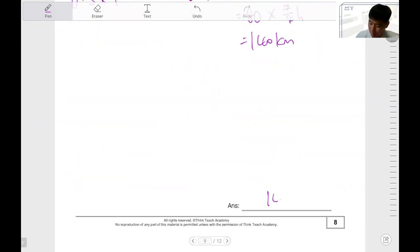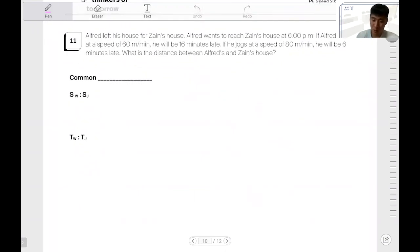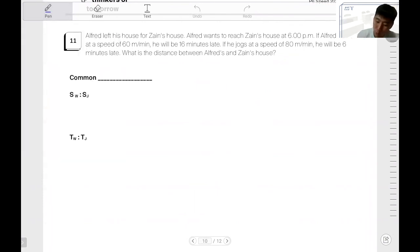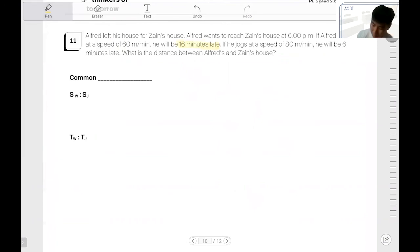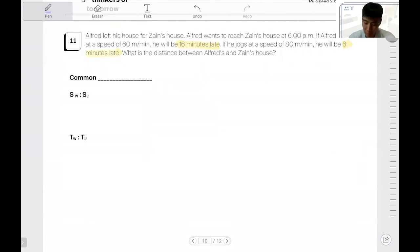Okay. So, it's the same thing for the subsequent few questions. The only tricky thing, which I think, which is probably where Lakehead, you may have made the mistake, is this. How do you interpret 16 minutes late and 6 minutes late? Okay, Lakehead. So, that's probably what you need to take note of. Okay. Again, you have to identify if this is common distance or is it common time?